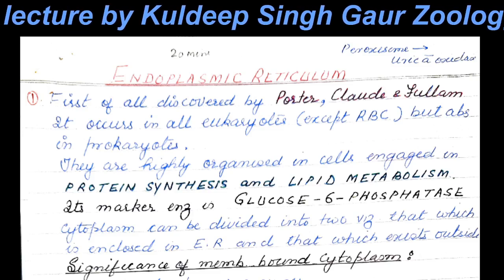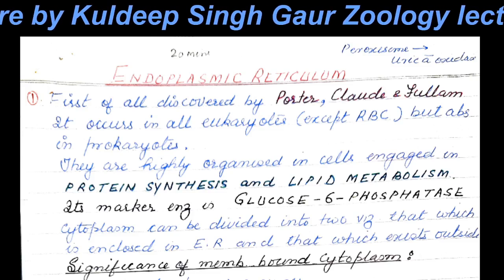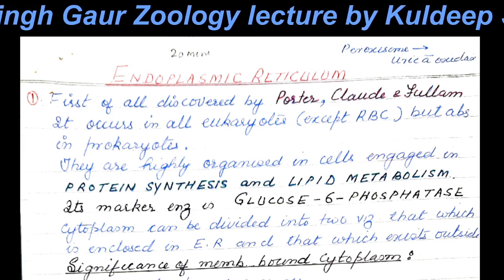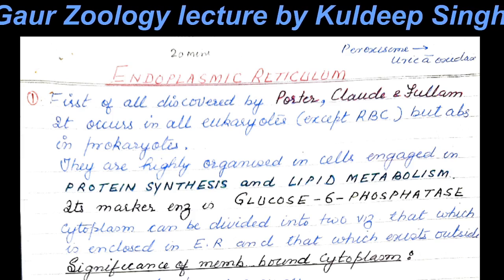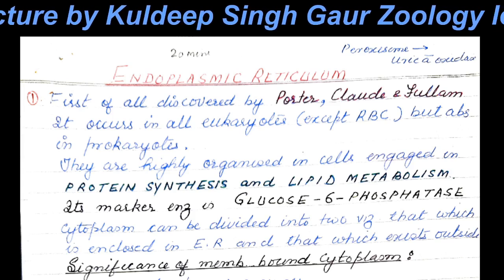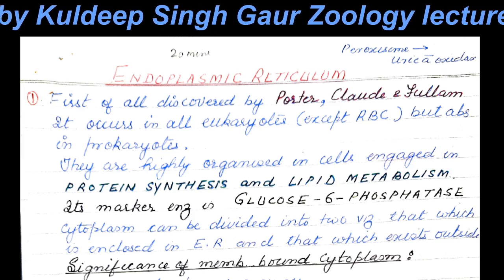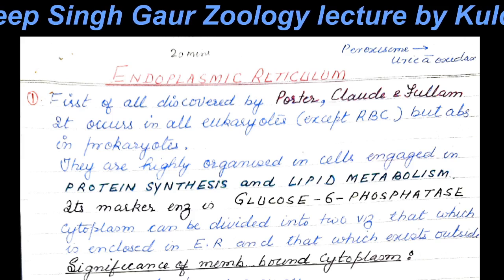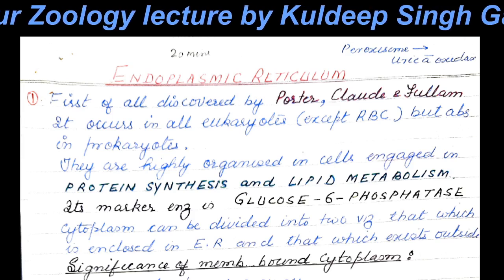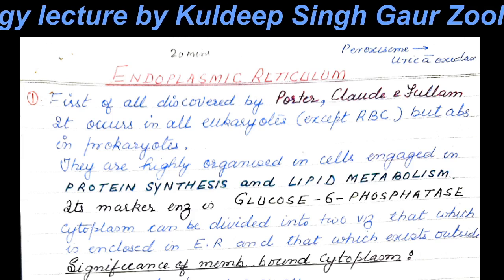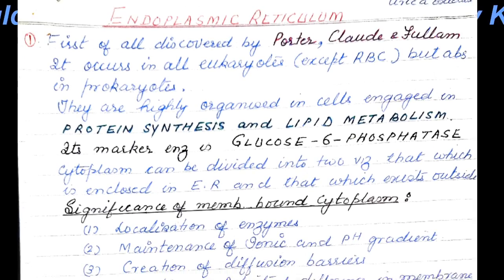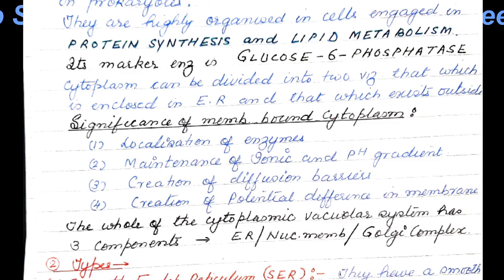In the last lecture we studied endoplasmic reticulum. It was discovered by Porter, Claude, and Fulham. Peroxisomes arise from endoplasmic reticulum. Endoplasmic reticulum is engaged in protein synthesis and lipid metabolism. To identify the endoplasmic reticulum membrane, you will invariably cite glucose-6-phosphatase, which is the marker enzyme of this organelle.